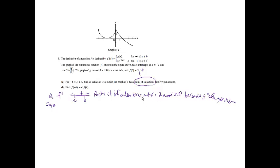That specific problem was worth two points. If you identified negative 2 and 0 as points of inflection, give yourself a point. If you said it's because f double prime changes sign, give yourself a point. Part b: find f of negative 4 and f of 4.